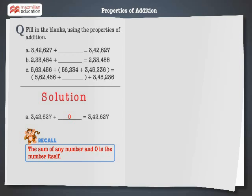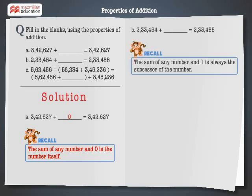Let's solve the next problem. 2,33,454 plus dash is equal to 2,33,455. Let's recall that the sum of any number and 1 is always the successor of the number. Hence, fill 1 in the blank.